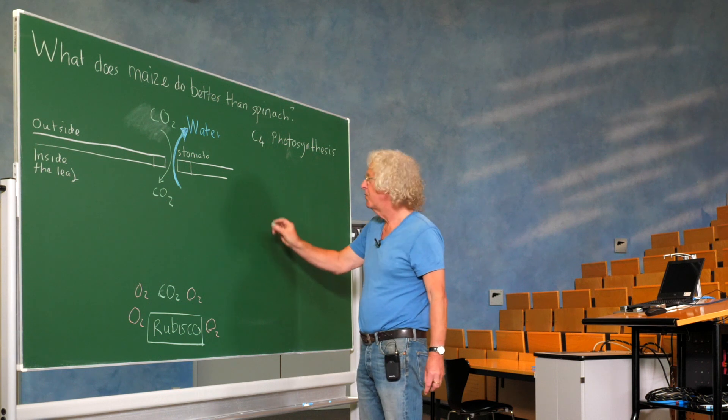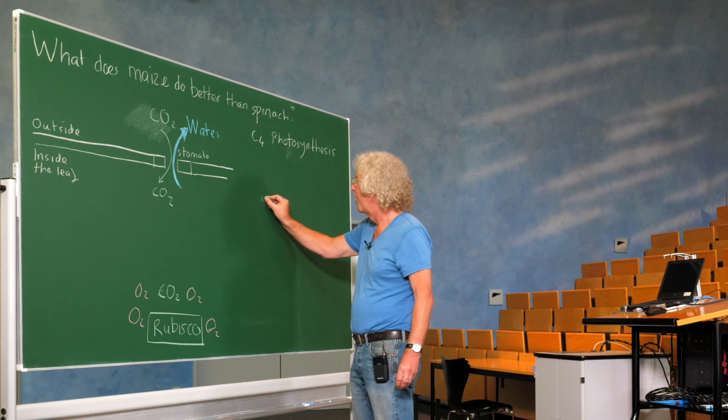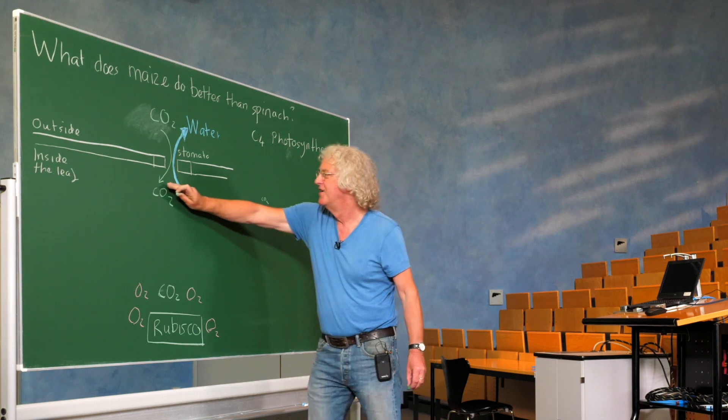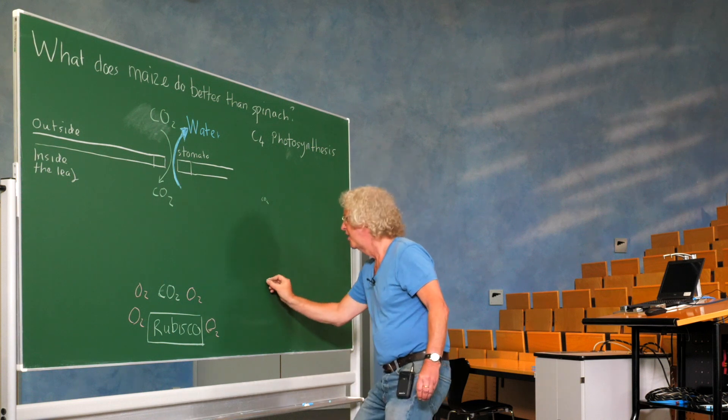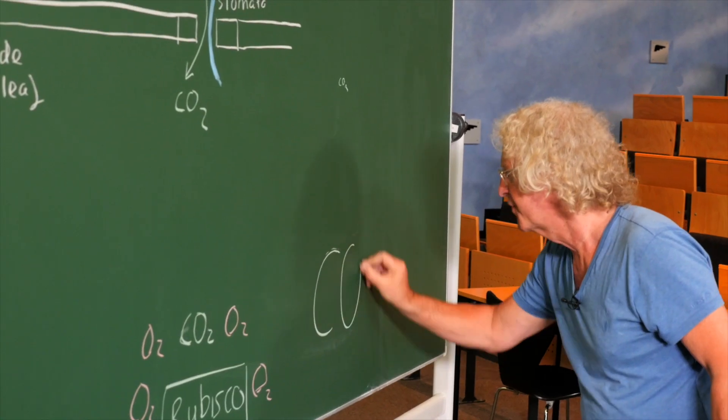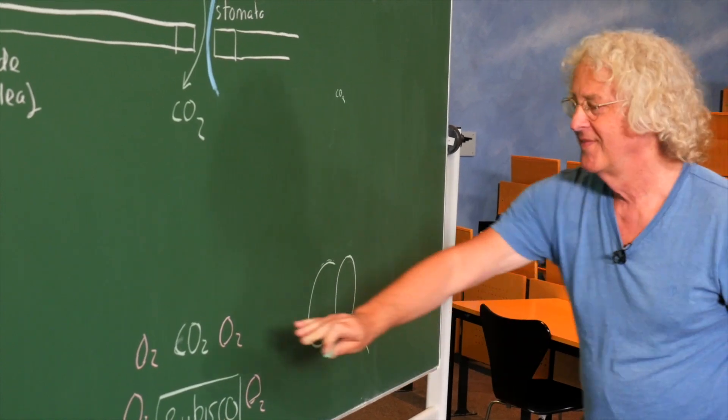But let's just draw what we would like. We would like low carbon dioxide just inside the leaf and we would like a lot of carbon dioxide around Rubisco.